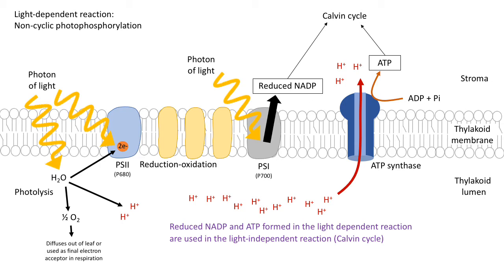That summarises all the steps you should have written down for non-cyclic photophosphorylation. Make sure to be very specific about the words you use and the description that you provide for that.